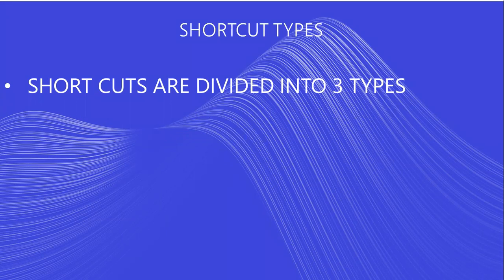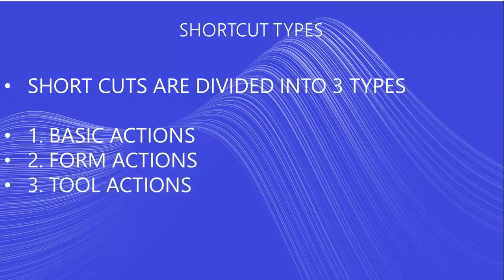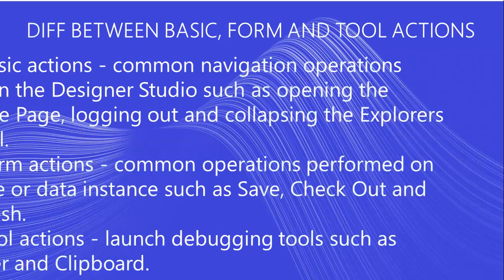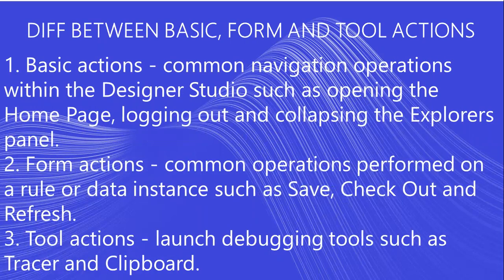These shortcut keys are divided into three types in Pega. The first one is basic actions, the second one is form actions, and the third one is tools actions. Basic actions cover common navigation operations within Designer Studio, such as opening the home page, logging out, and collapsing or expanding the explorer panels. Form actions cover common operations performed on rules or data instances, such as save, checkout, and refresh. Tools actions cover debugging tools like Tracer, Clipboard, Live UI, and PAL.